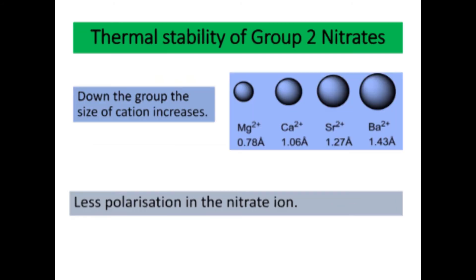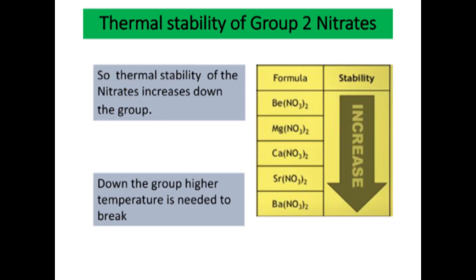Thermal stability of Group 2 nitrates follows a similar reason to Group 2 carbonates. Down the group, the size of the cation increases due to more shells, resulting in less polarization in the nitrate ion. Therefore, thermal stability of the nitrates increases down the group.